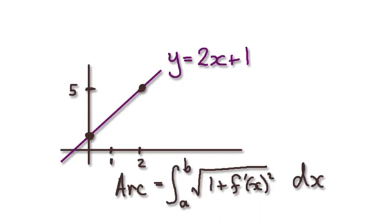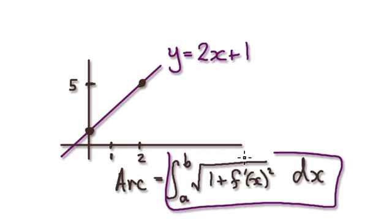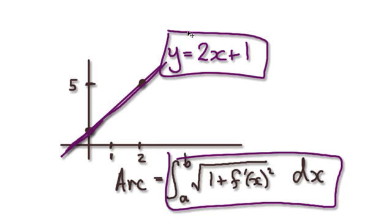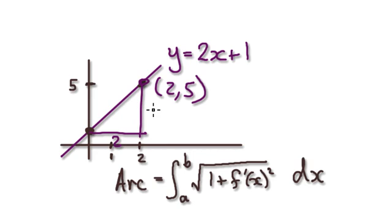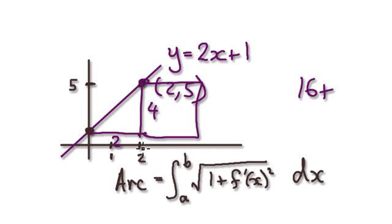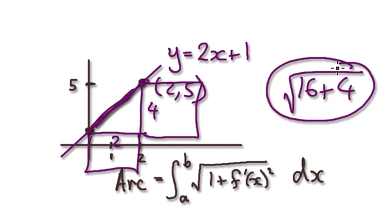Let's give you some more practice. Here we're going to check that our formula for the arc length is consistent, even in the case of it being a straight line. So here we've got a straight line, and the coordinates here are (2, 5). We can use Pythagoras: this side is 2 and this side is 4, so Pythagoras gives us 16 plus 4, then square root it. So this length is given by √20.